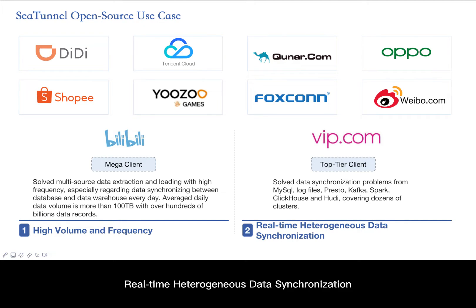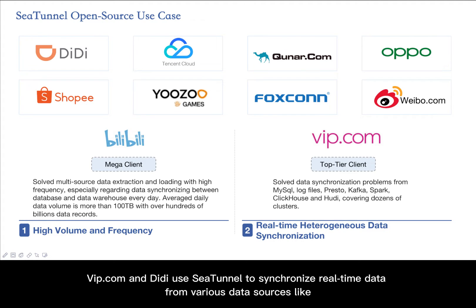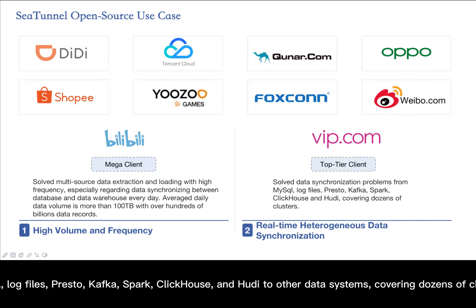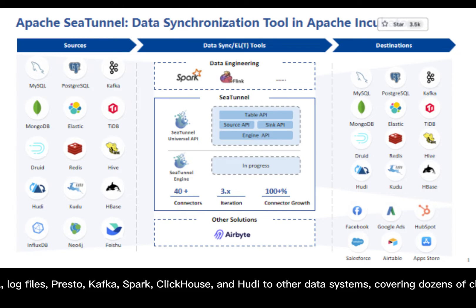Real-time heterogeneous data synchronization: VIP.com uses C-Tunnel to synchronize real-time data from various data sources like MySQL log files, Presto, Kafka, Spark, ClickHouse, and Hudi to other data systems, covering dozens of clusters.